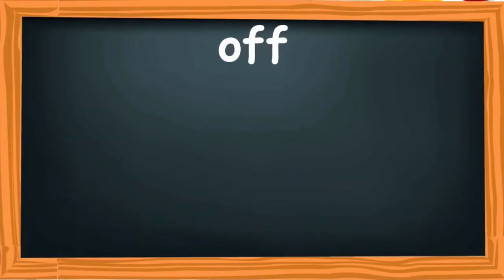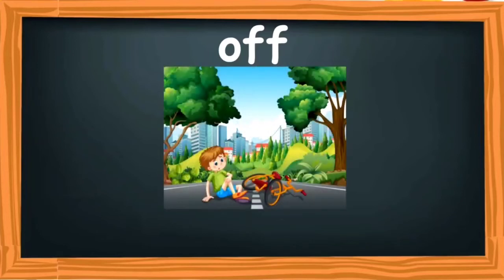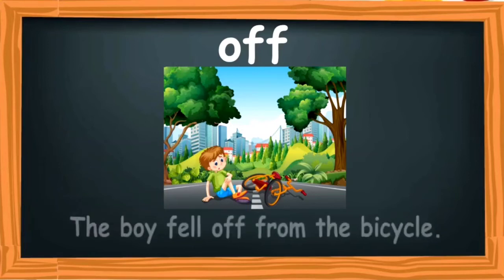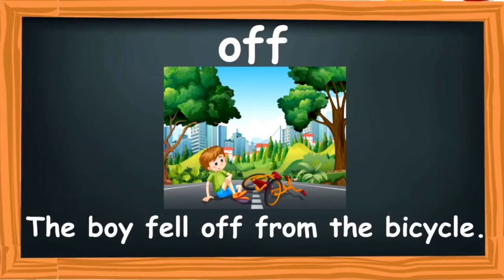The next word is 'off.' Look at the word and read it — off. What does 'off' mean? 'Off' refers to away from a place or from somewhere. Let's look at the image. What can you see here? A boy. What was he doing? You can see the cycle, so he was cycling. But right now, what has happened to him? Is he still riding the cycle? No. The sentence is: 'The boy fell off from the bicycle.' The boy was riding the bicycle but he fell off from the cycle. Let us move on to the next word.